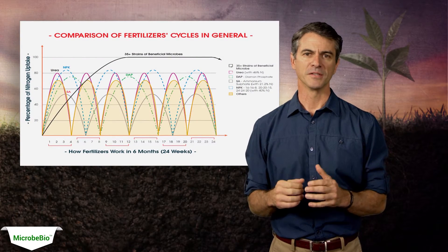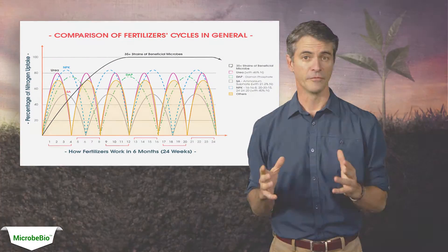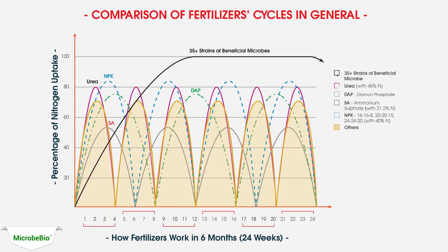There are many types of fertilizers currently on the market, each with different functions. The chart shows a comparison between microbial fertilizer and different kinds of fertilizers such as NPK, DAP, SA, and urea. In fact, plants can only absorb 35 to 40% of useful nutrients using conventional fertilizers. The remaining 60 to 65% of nutrients are washed away, evaporated, or become harmful agents in the soil.